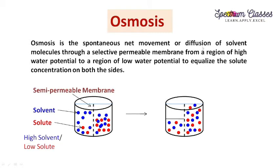What is the difference between diffusion and osmosis? In diffusion, solute and solvent molecules from high concentration to low concentration are free to move in any direction. But in osmosis it is directional — from high solvent to low solvent side, or from low solute to high solute side. Also, a semi-permeable membrane is required for osmosis.